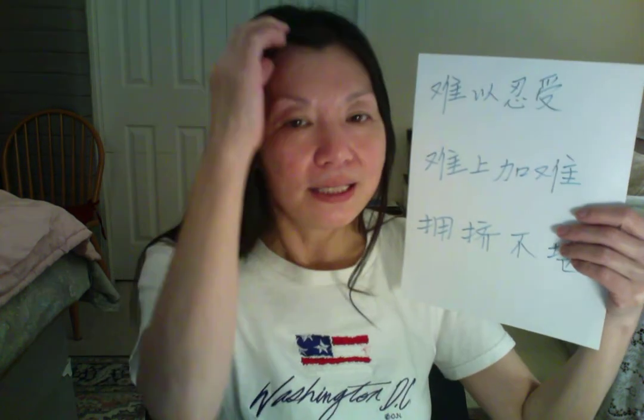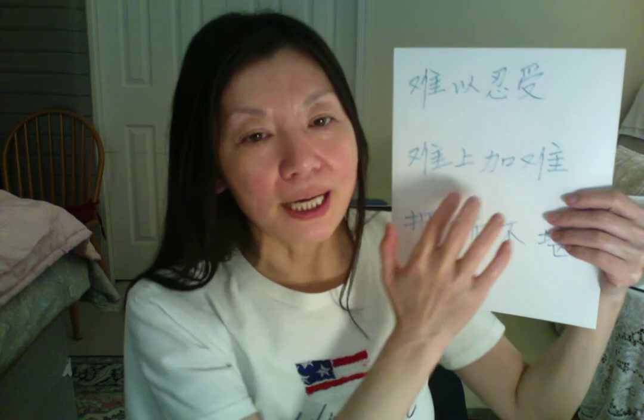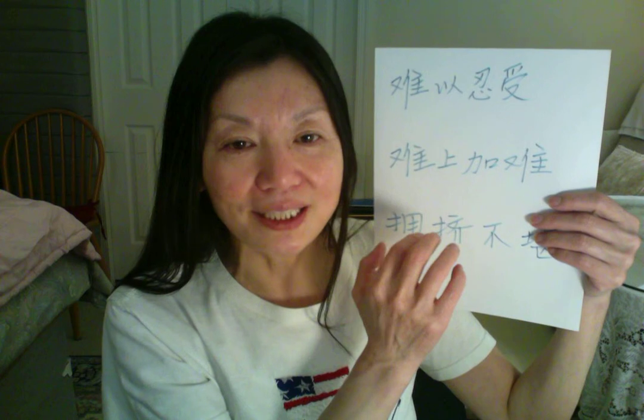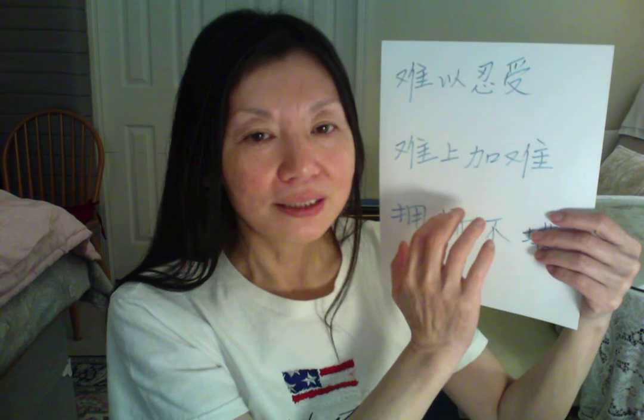Next: 难上加难 (nán shàng jiā nán) — means 'difficulty upon difficulty,' already very hard and then it gets even harder. 冬天很冷的时候, 如果外面下雪, 地上再有冰, 那样开车真的是难上加难! Another example: 今天的工作太多了, 我已经很累了, 可是我的老板还说你要继续坚持两个小时 — that is 难上加难. Already tired, still have to continue two more hours.